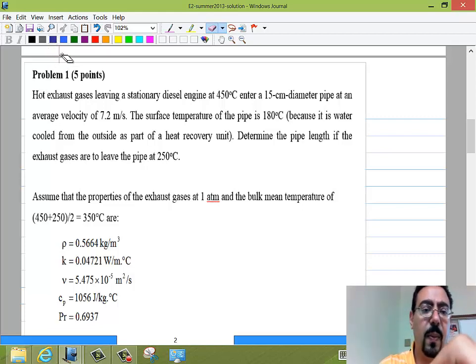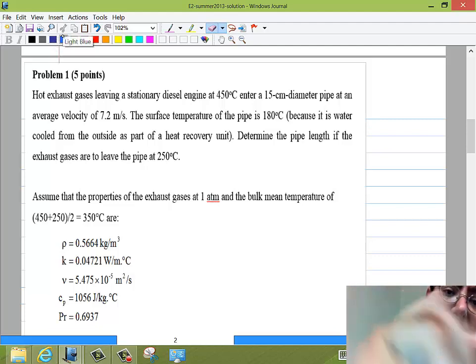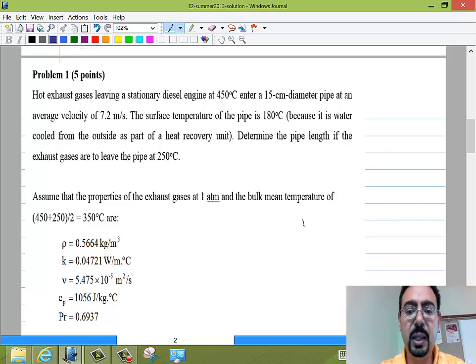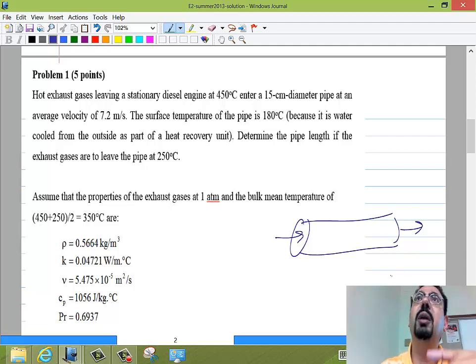The first problem: There are hot gases leaving a diesel engine, and before he actually sends them to the stack, he would like to use some of their energy. So he's having a water jacket around them, so the water is being heated by the diesel exhaust. As a result of that water jacket, the surface temperature of the pipe was 180°C.